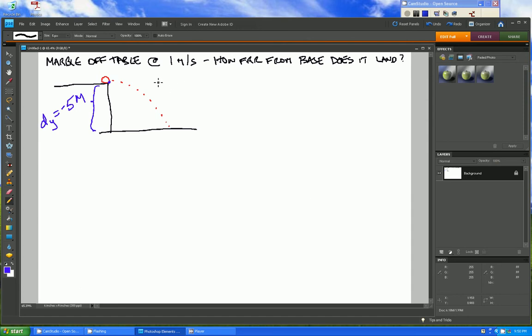We also know the initial velocity in the x direction is equal to one meter per second. It's given in the problem statement right above here and it's positive because it's going to the right. That also is the final velocity in the x direction and it happens to be the average velocity in the x direction.